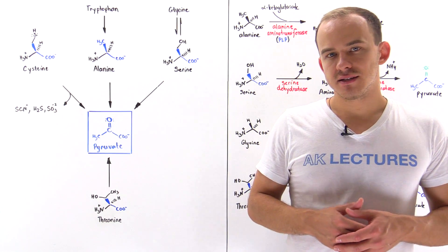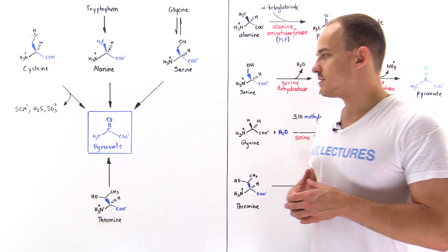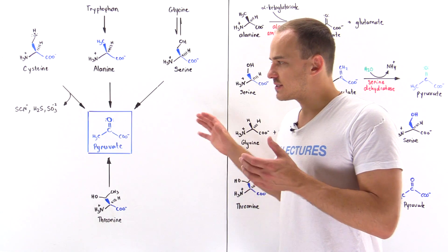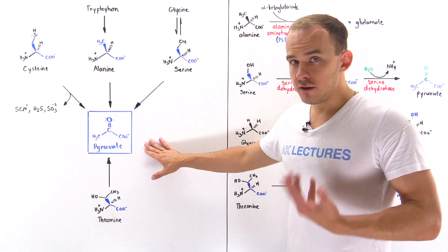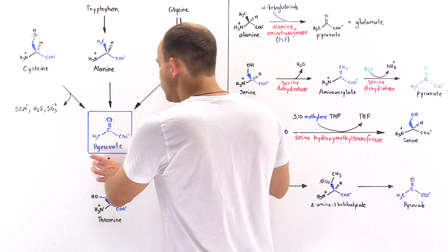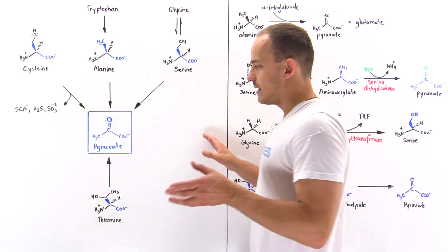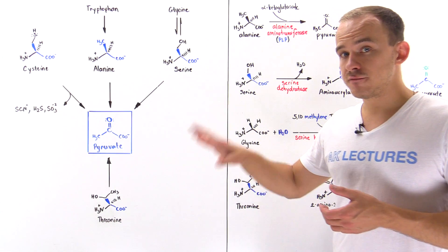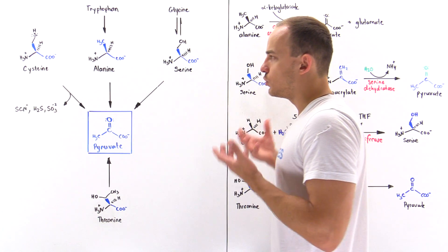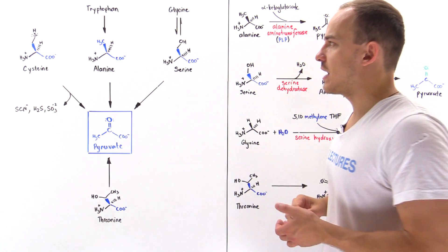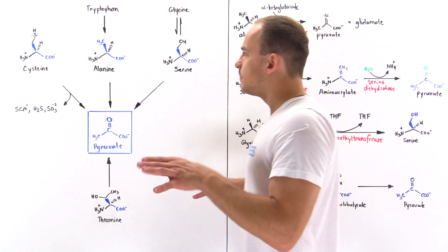Six out of the 20 amino acids can readily be metabolized into pyruvate, and because of that we call them glucogenic. Remember, inside our liver we can transform pyruvate into oxaloacetate, and then the oxaloacetate is transformed into glucose via gluconeogenesis. That's why we call them glucogenic. Now some of these are actually ketogenic as well, but let's not talk about that.